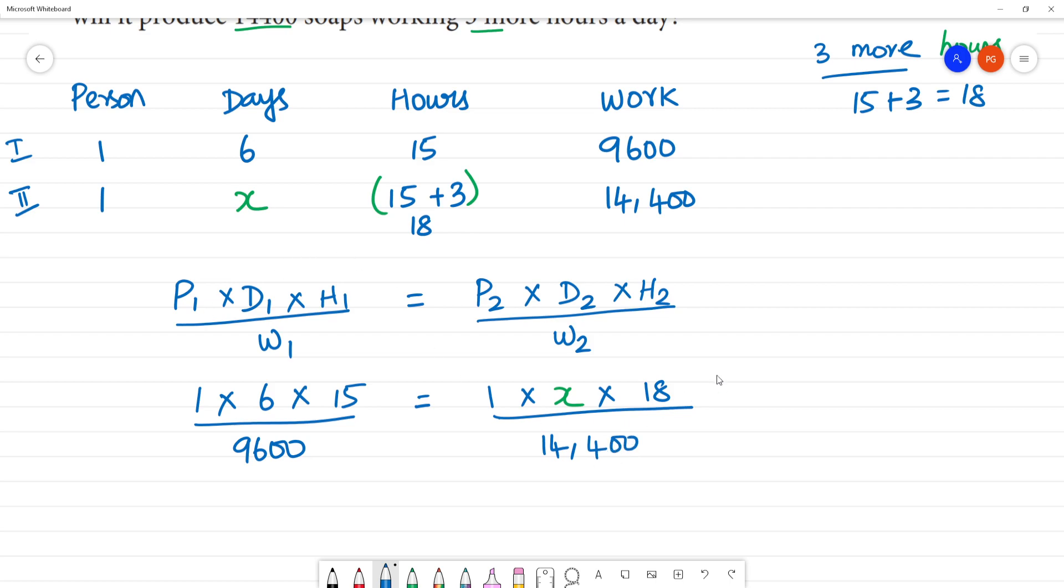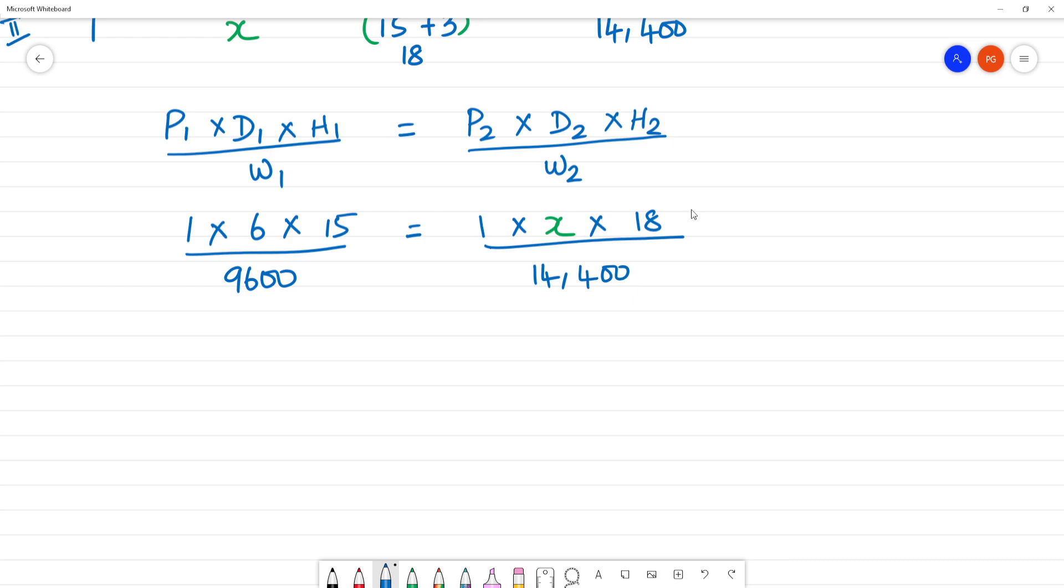Clear? What's the problem we use? This is about X. We use this problem. Now we have 14,400.